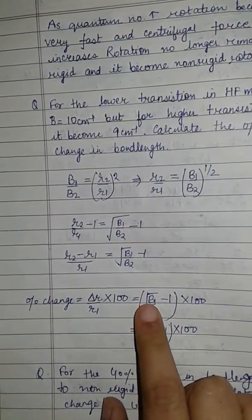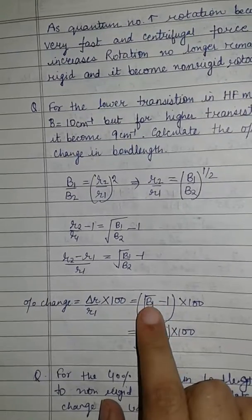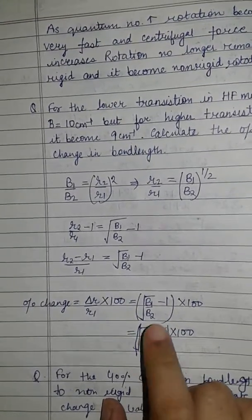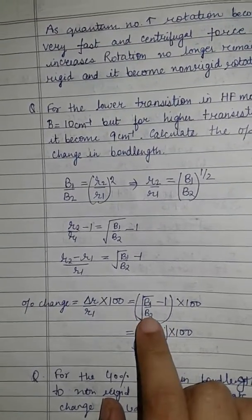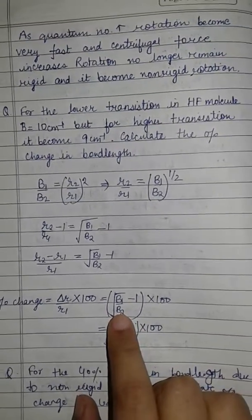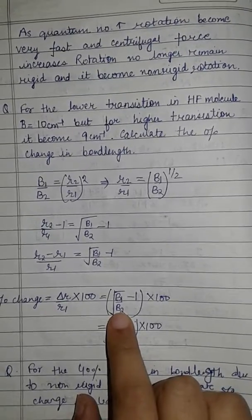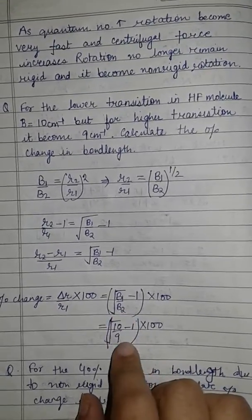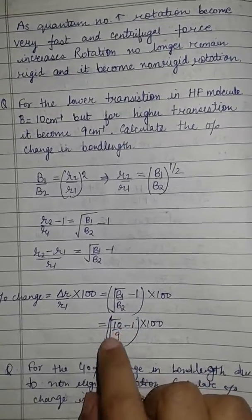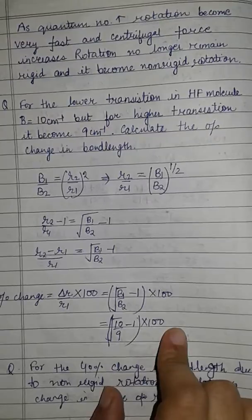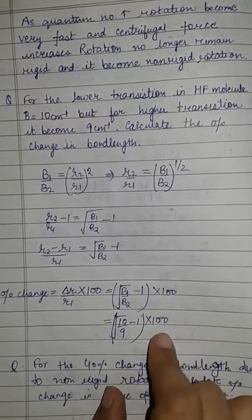From the question, B₁ for the lower transition is 10 cm⁻¹ and B₂ for the higher transition is 9 cm⁻¹. So the percentage change in bond length = (√(10/9) − 1) × 100.